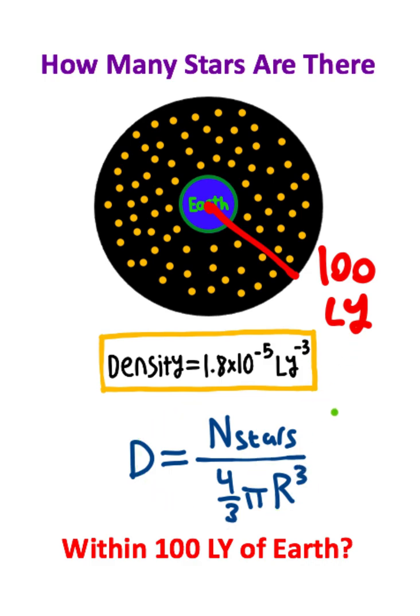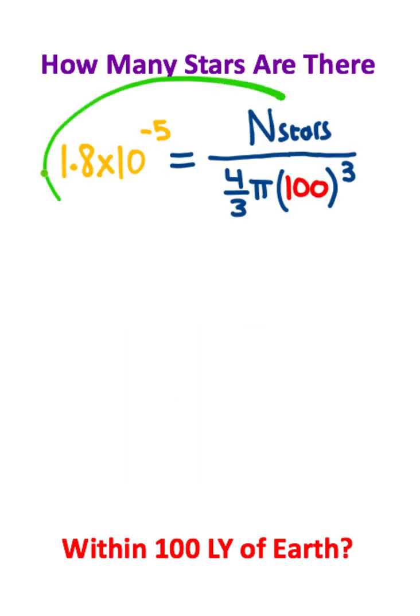Now we have our equation. The radius is a hundred light years, and the density is given in this problem. This is what the equation will look like where we just need to solve for the number of stars.